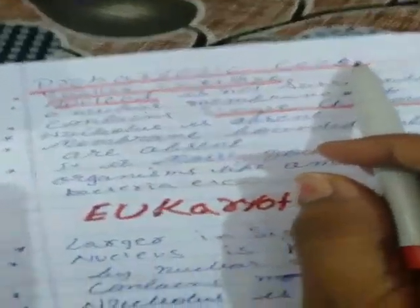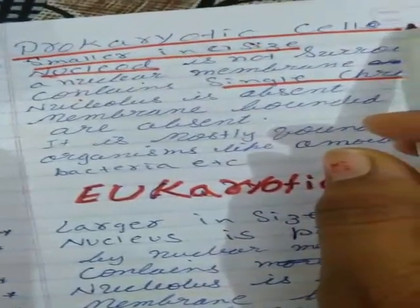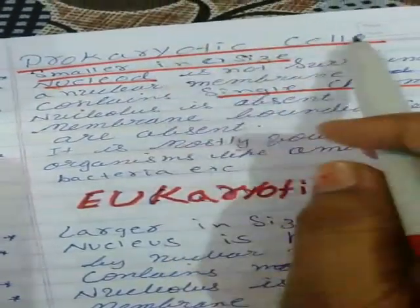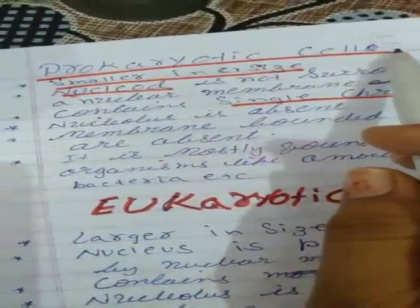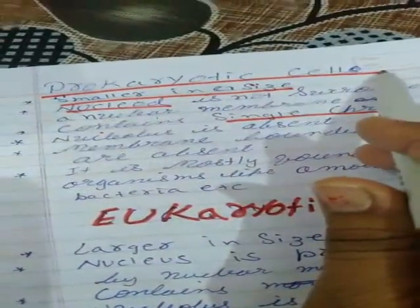On the basis of organization, cells are of two types: prokaryotic and eukaryotic. Let us discuss a few characteristics of the prokaryotic cell.